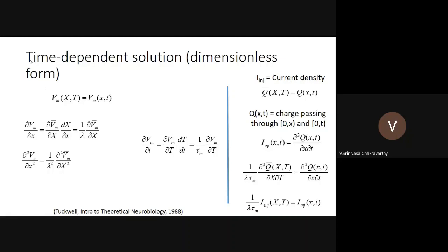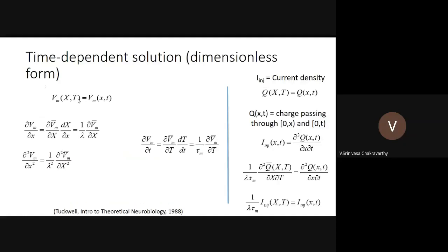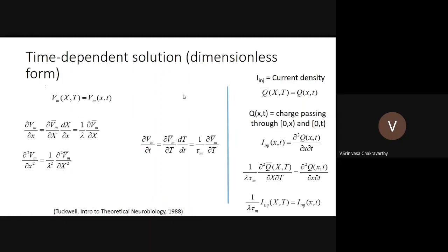This relationship for the time derivative is straightforward — you can see that lambda simply gets absorbed into x (giving x/λ = X), and tau_m gets absorbed into t. So those are the space and time derivative transformations. Now let us come to how to represent the injected current I_inj. You must notice that it is a current density — a current given at every point along the cable, so it is charge per unit distance per unit time.